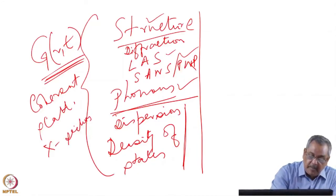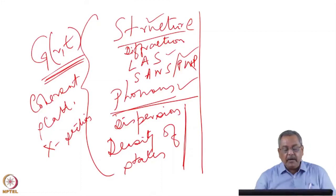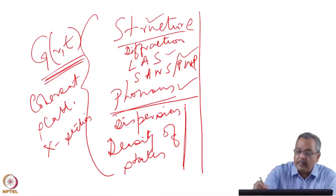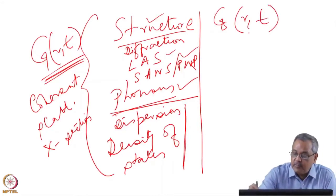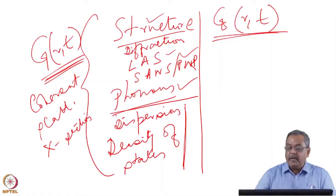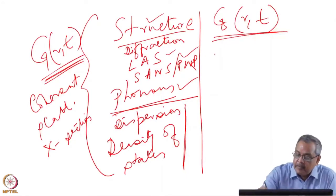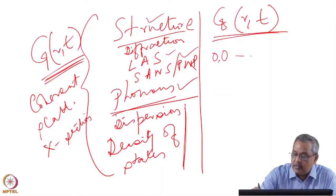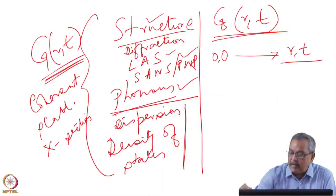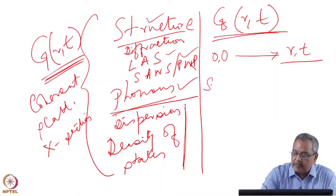In these experiments the incoherent scattering cross section is a nuisance — it's a background. But now when you talk about the self-correlation function Gs(r,t), which we study in stochastic motion experiments, it is the same particle which is at the origin at time t=0, and we ask: what is the probability of finding it at position r at time t? This is the self-correlation function.